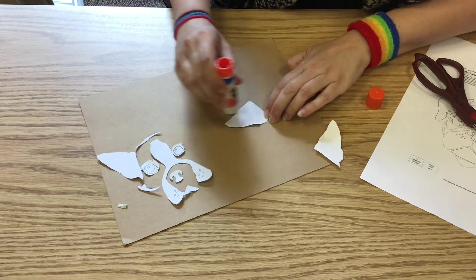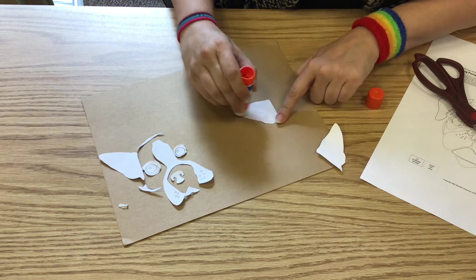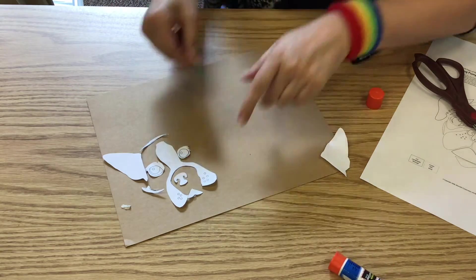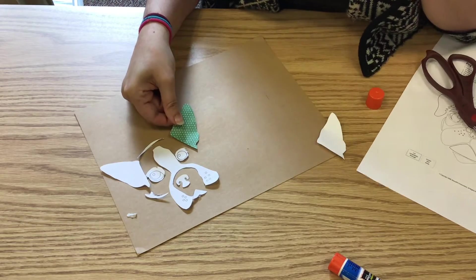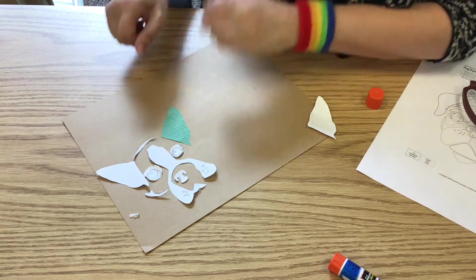And you're just gonna glue on the white back here all the way to the corners. And then you can put it down.